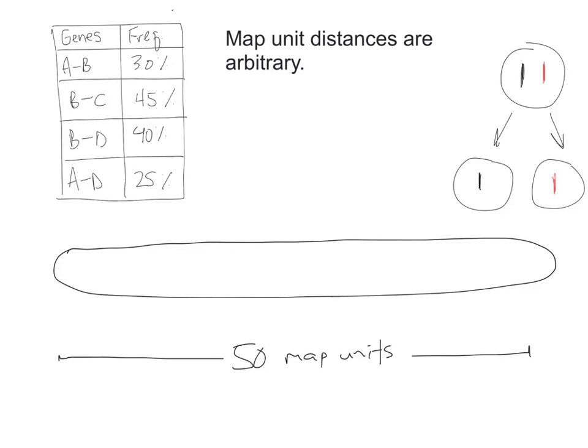And the first rule is that map unit distances are arbitrary. And the unit that is used is a centimorgan, C capital M, not a centimeter, a centimorgan. And this name comes from Thomas Hunt Morgan, who did this work with fruit flies back in the early 1900s, late 1800s. And Paul Anderson has got a great video about the history of gene mapping as well as some examples. So I encourage you to go watch that. It's linked in the video description. I'm not going to get into the history here. We're just looking at application.